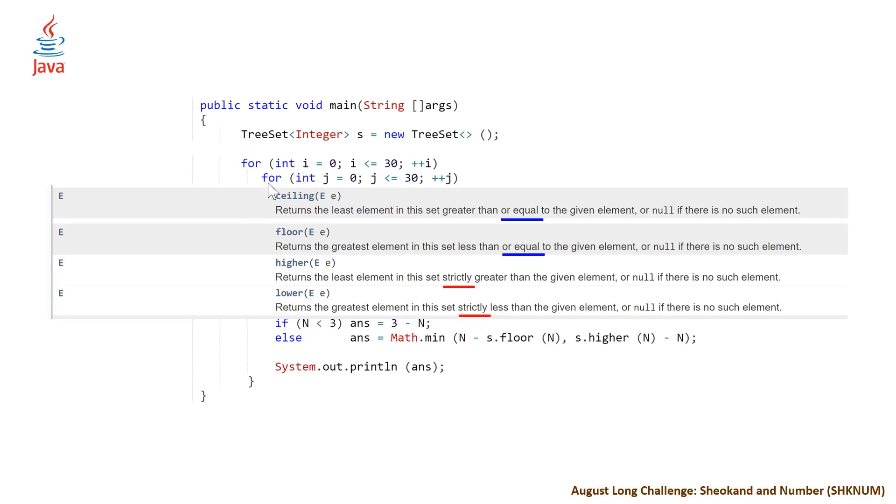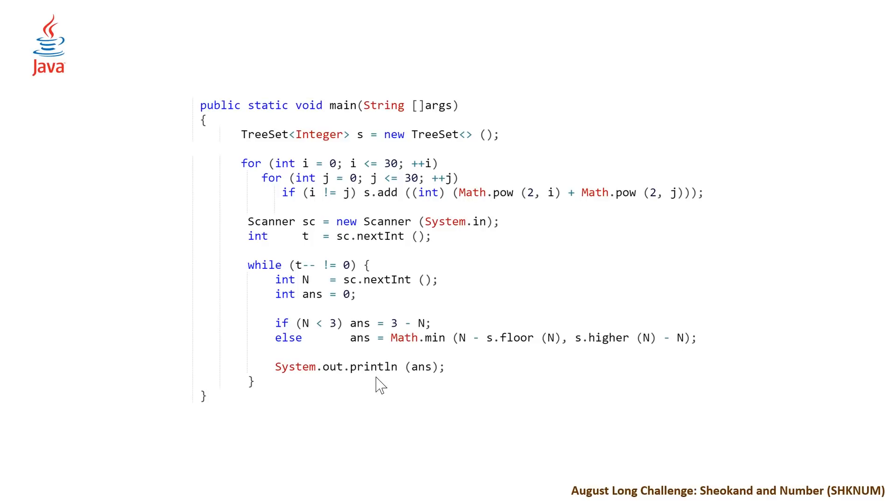This is actually quite nice. In C++, they have lower bound which fits into the equal category, and upper bound that fits into the higher/lower category, whereas in Java they split these out, which is pretty nice. You're never going to get confused. Here, because we want to capture the zero difference if n happens to be in our tree set, we use floor for one and higher for the other. Or you could do lower and ceiling. Once we've done this, we print out our answer.